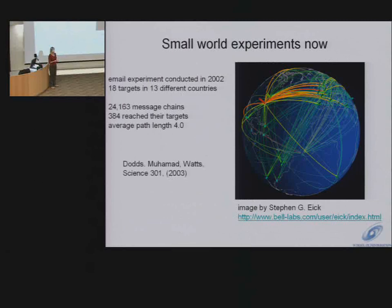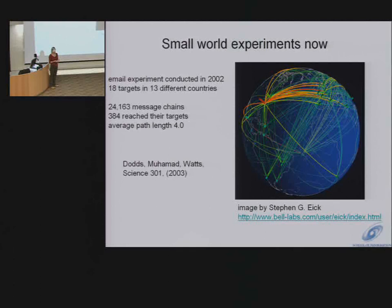The experiment was recently repeated at Columbia using email. So rather than mailing an envelope, you would just email someone you knew. In this experiment, they expanded it to 13 countries on different continents. And for the messages that got through, the number of hops was just four. So it really is a very small world. Now granted, only about 1% or less of the messages got through, because people kind of ignore spam in their inboxes.